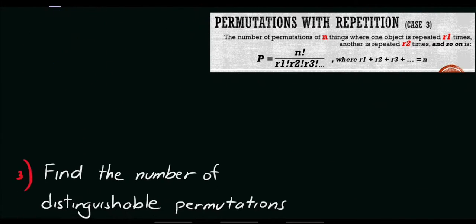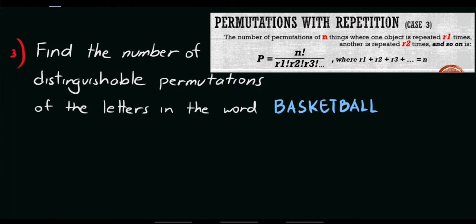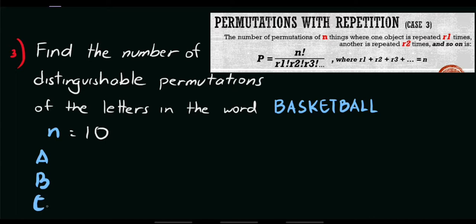For item number 3: find the number of distinguishable permutations of the letters in the word BASKETBALL. First, count the number of letters: 2, 4, 6, 8, 10 — so N = 10, meaning we will use 10 factorial. Next, list all distinct letters: A, B, E, K, L, S, and T.